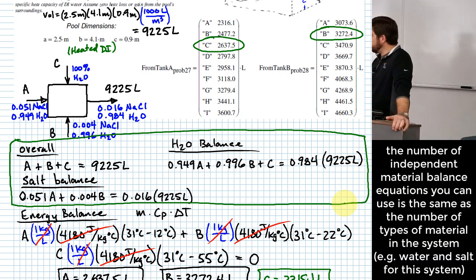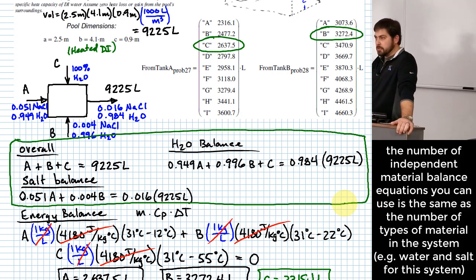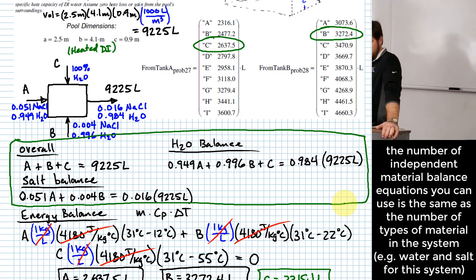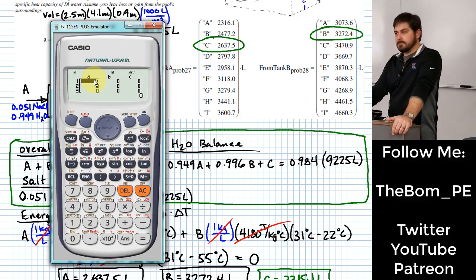You can always use as many types of components as you have. That's how many independent equations that you can write. So in our case, we have salt and water. We have two components. That means we can write two mass balance equations independently of each other, but not more than that. So that's why we need the third. Excellent.